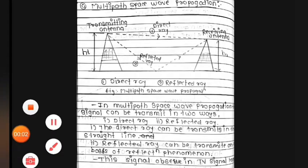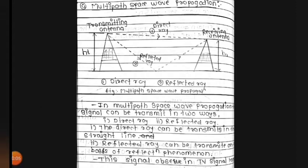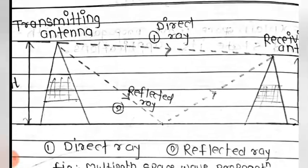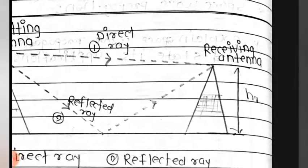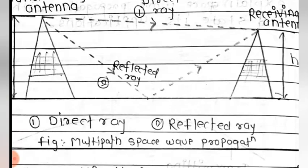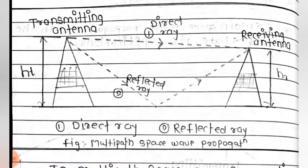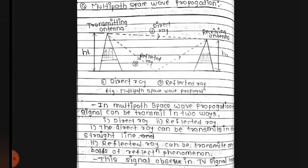Next point in space wave propagation is multi-path space wave propagation. In this, there are two rays — that is, direct ray and reflected ray. One transmitting antenna and one receiving antenna are there. Multi-path space wave propagation signal can be transmitted in two ways: direct ray and reflected ray.